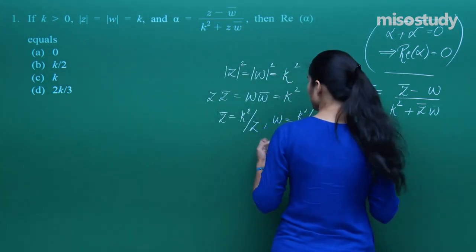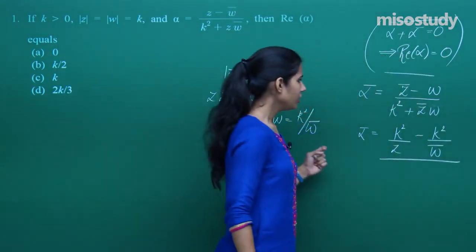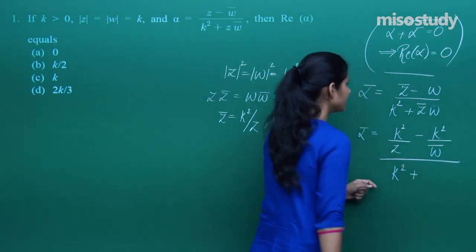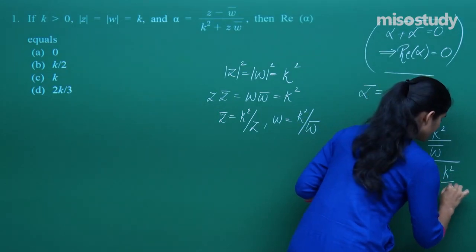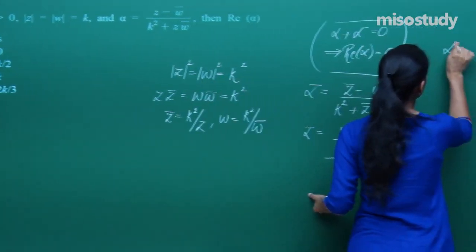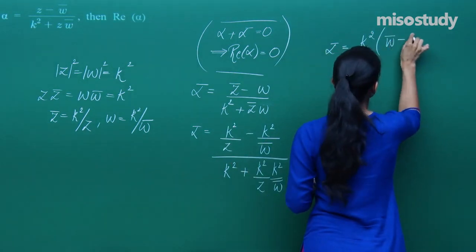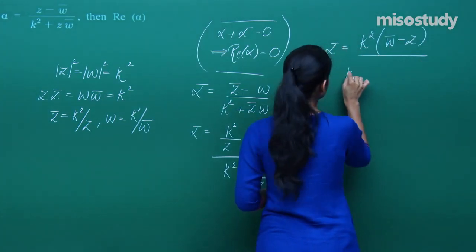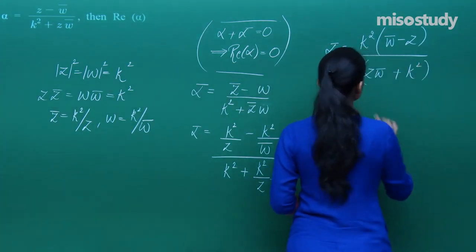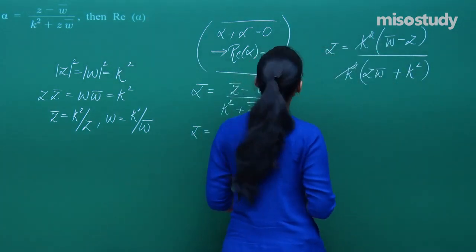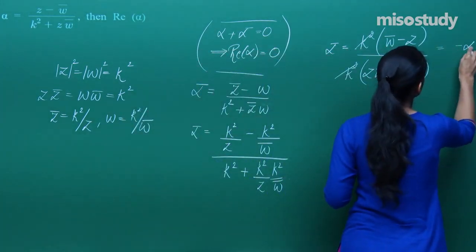So z̄ = k²/z and w = k²/w̄. If you incorporate those values — z̄ is k²/z — and simplify, what you get is ᾱ = k² common (w̄ minus z) upon (k²·zw̄ plus k⁴). k² can come out common, and after cancellation you are left with (w̄ minus z) upon (zw̄ plus k²), which is nothing but minus alpha.